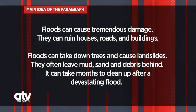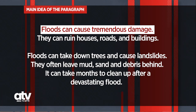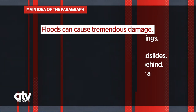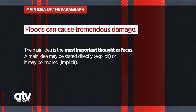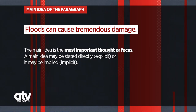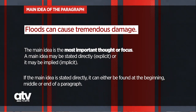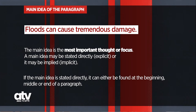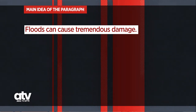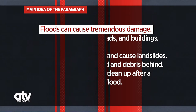Today, we will identify the main idea, key sentence, and the supporting details from the text listened to. The first sentence, which says that 'Floods can cause tremendous damage,' is called the main idea in the paragraph. It is the most important thought or focus. A main idea may be stated directly or explicit, or it may be implied or implicit. If the main idea is stated directly, it can either be found at the beginning, middle, or end of a paragraph. In the paragraph we had, the main idea was found in the first sentence, which is also called the key sentence.